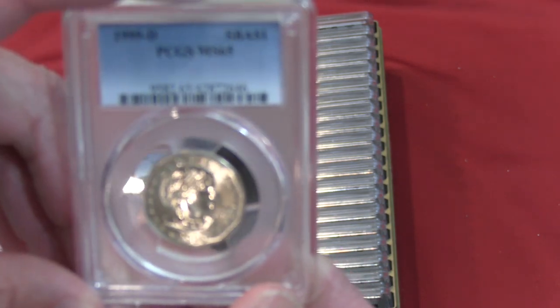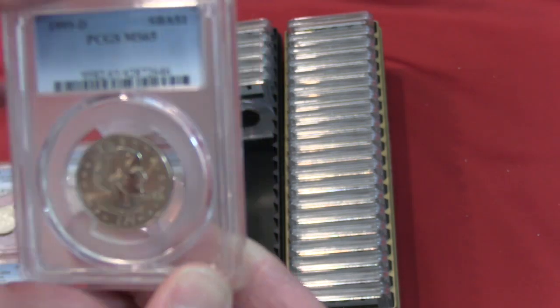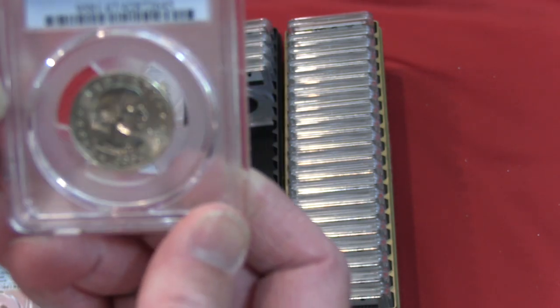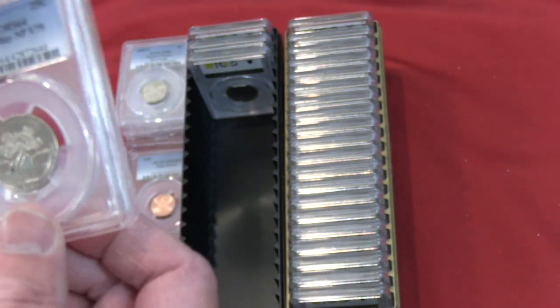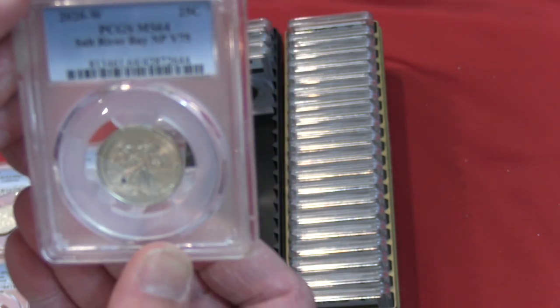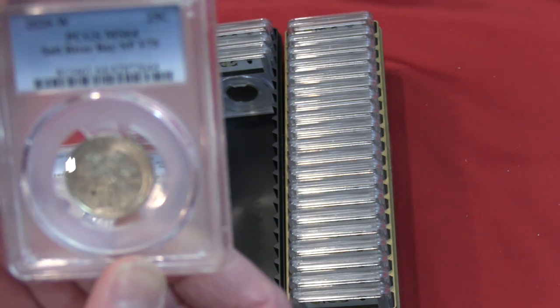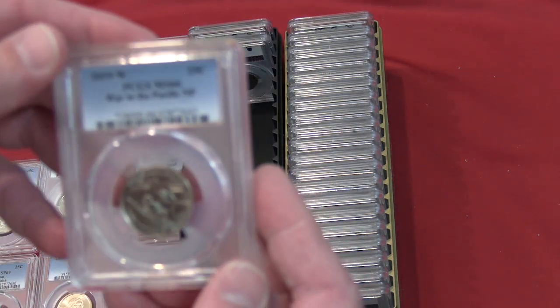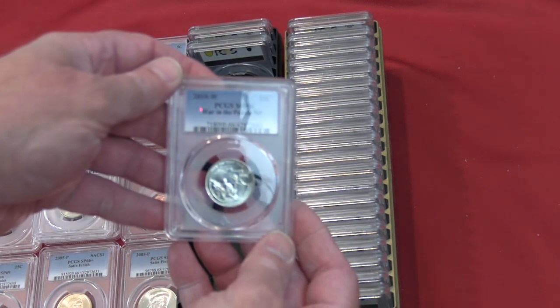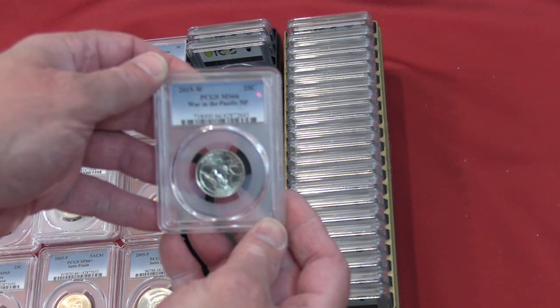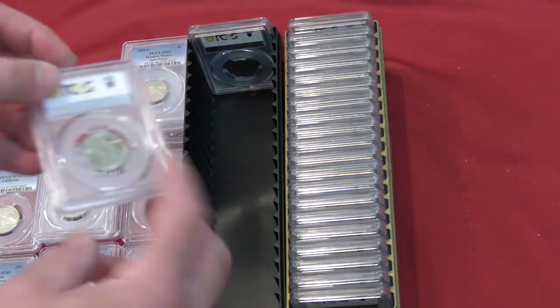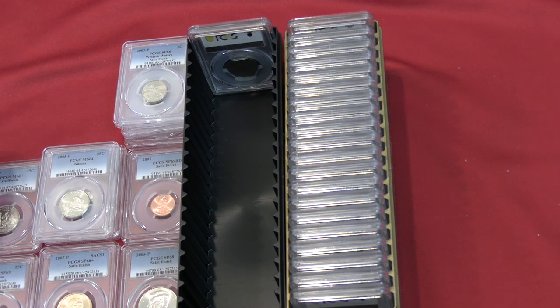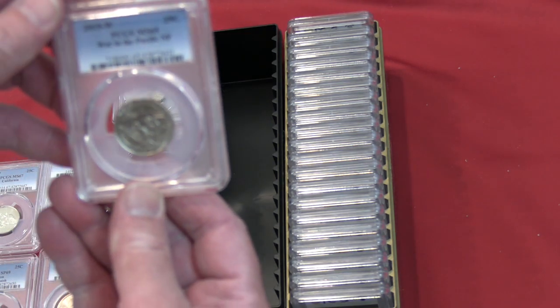1999 Susan B Anthony MS-65. 1999 P MS-67 Susan B. 2020 PW Salt River Bay V-75 MS-64. It had a little spot right here, that's probably why it got 64. 2019 W War in the Pacific MS-66. Another War in the Pacific MS-66. Another War in the Pacific MS-65. That's the first box, that's the one that wasn't full. Another War in the Pacific MS-64 plus.